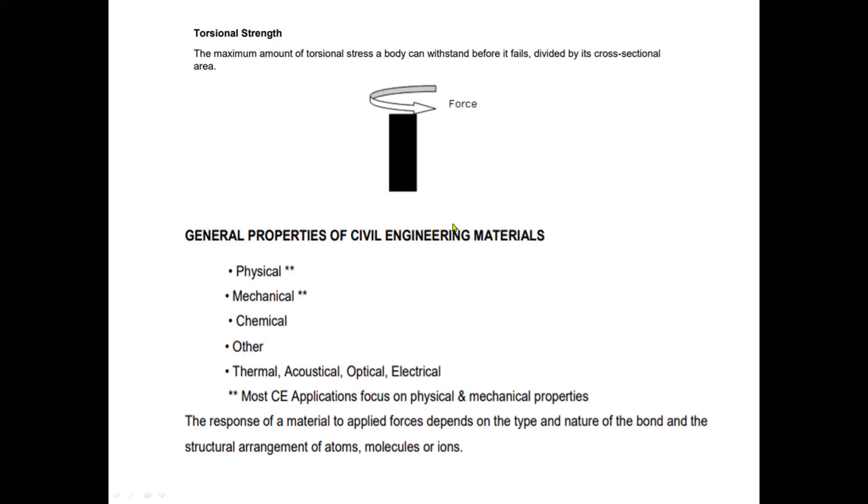The general properties of civil engineering materials are the following: physical, chemical, and others. We also have thermal, acoustical, optical, and electrical. Most CE applications focus on physical and chemical properties. The response of a material to applied forces depends on the type and nature of the bond and the structural arrangement of atoms, molecules, or ions.